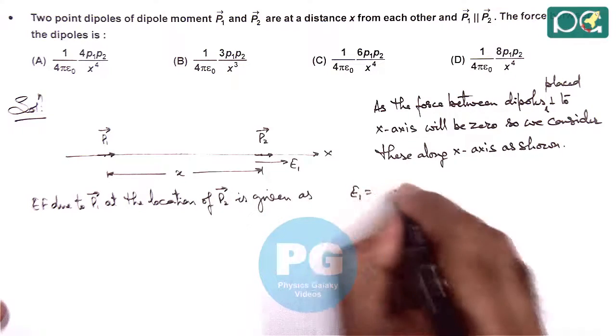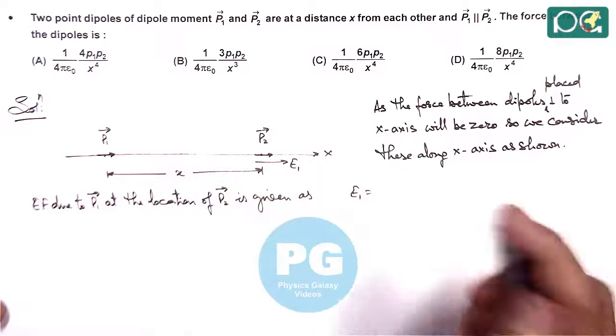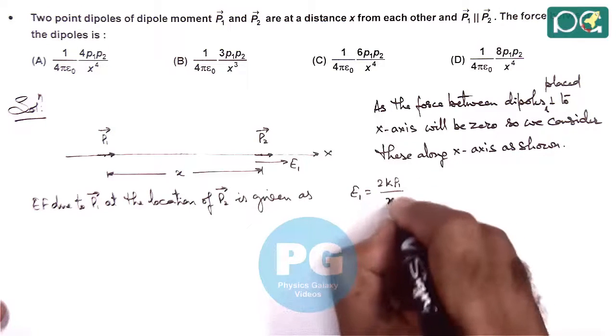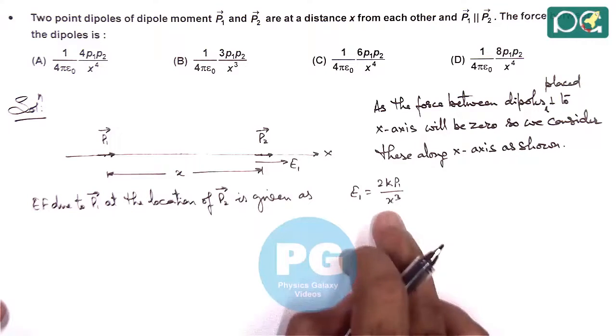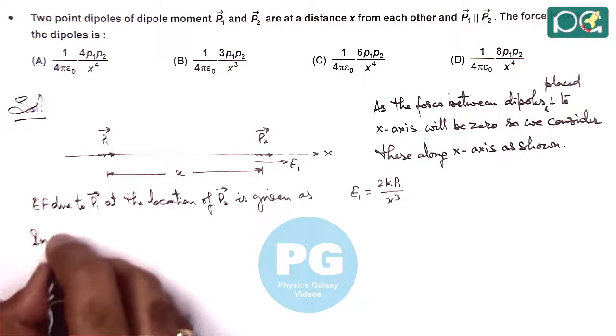This is the radial field along the axis, given by 2kp1 by x cube, as it is varying with x, so we can write this is non-uniform electric field.